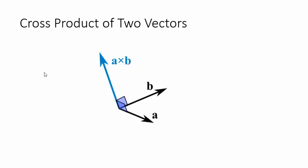In this video we want to derive a formula for the cross product of two vectors. The cross product of two vectors is another vector that's perpendicular to both of your vectors. If I want to find the cross product of vector A and vector B, and they are lying in some plane, and we connect those two vectors at the tail, then the cross product is going to be another vector perpendicular to both.